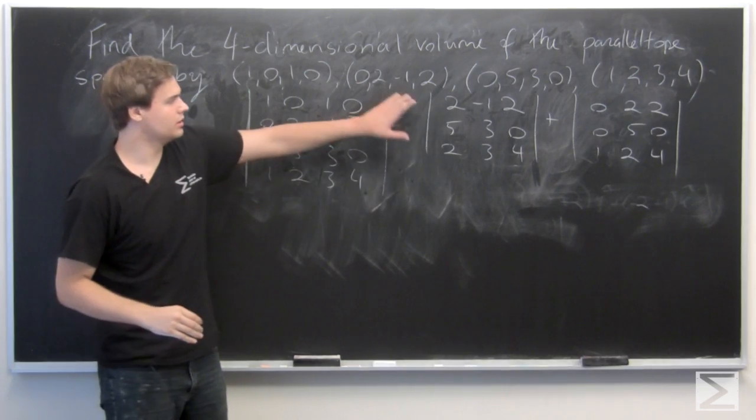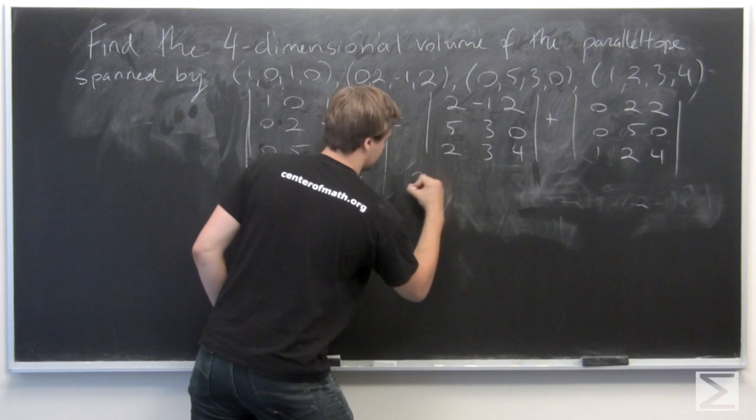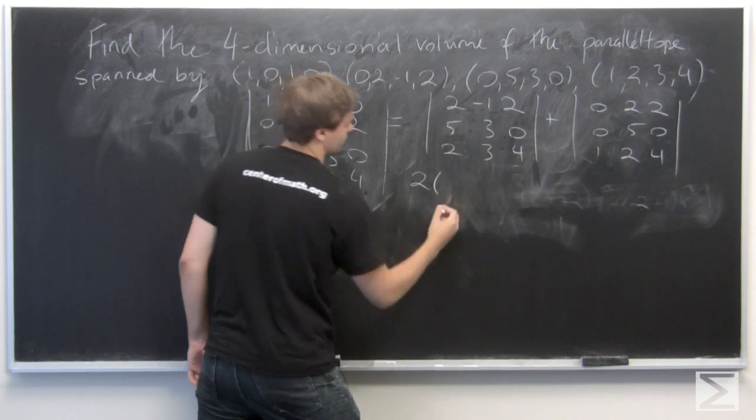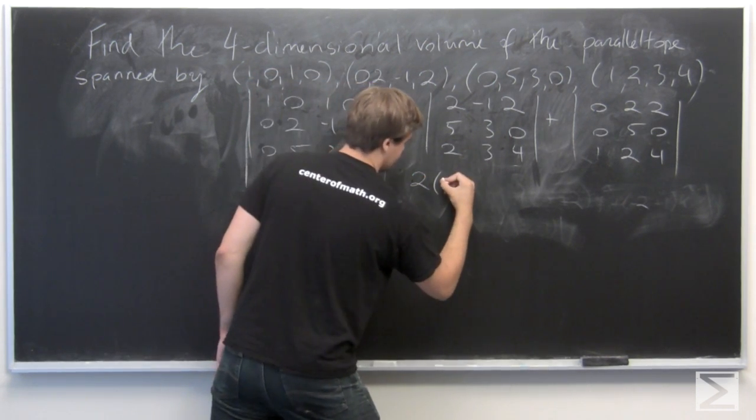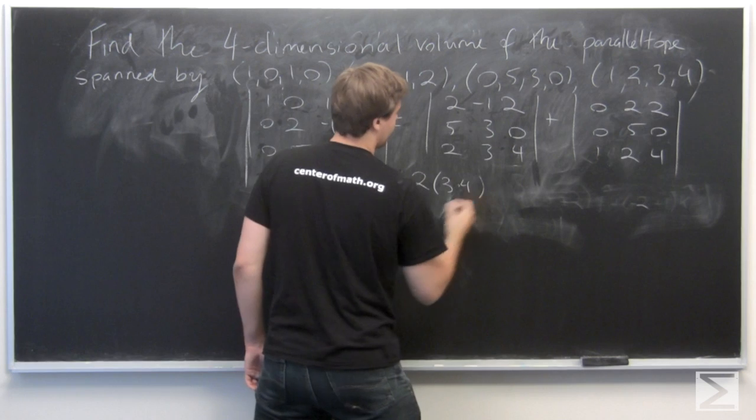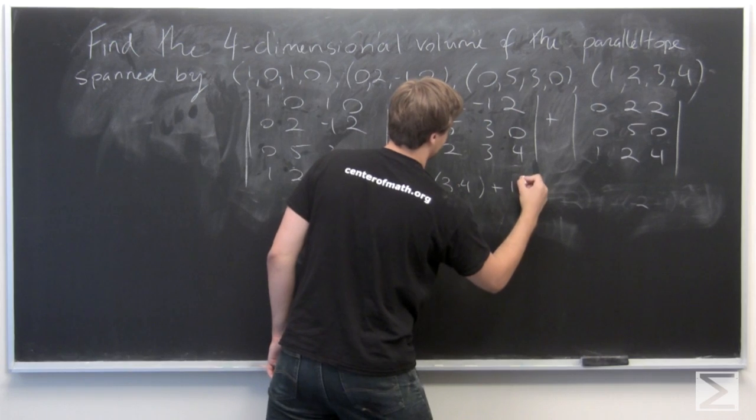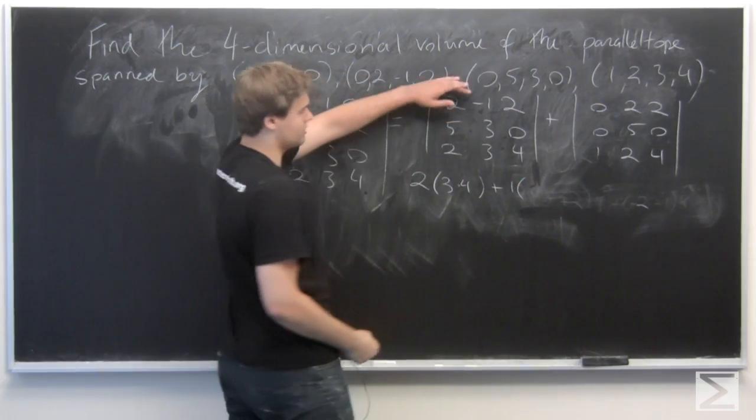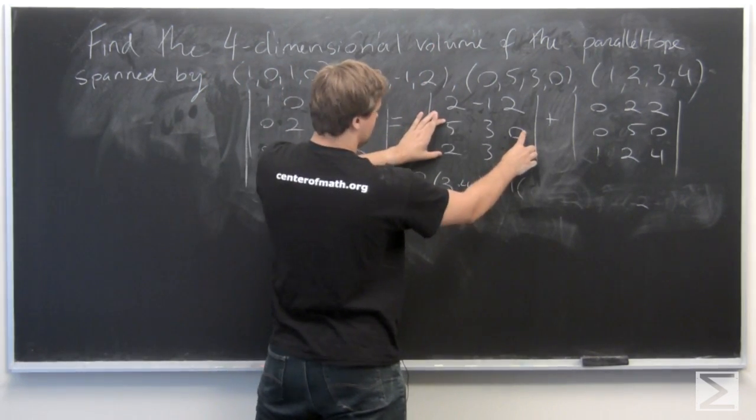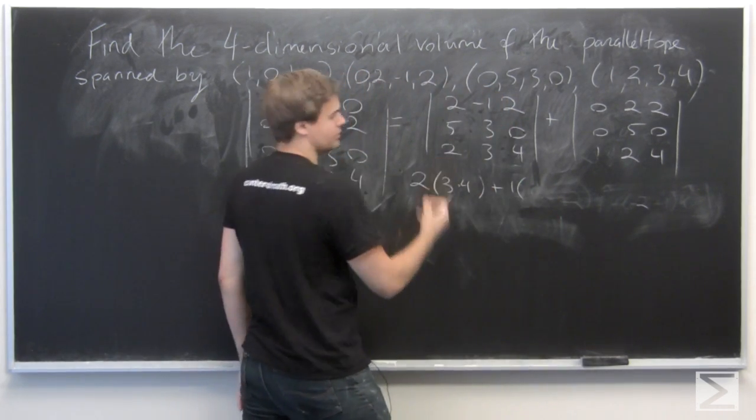Let's calculate this in some steps. For the first one, we have 2 times the determinant of this 2 by 2 matrix, so 3 times 4 minus 0, minus -1, so plus 1, times the determinant of the matrix given by throwing away the top row and the middle row. We get 5 times 4 minus 0, so 20.